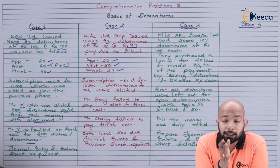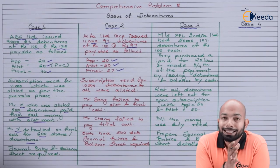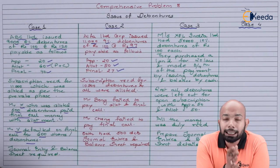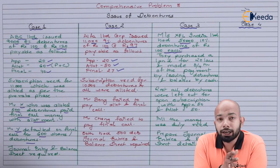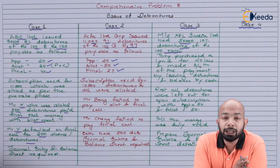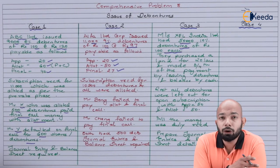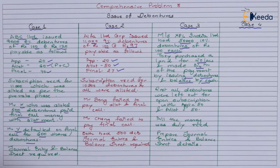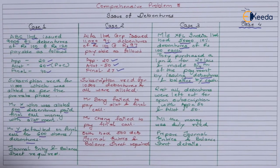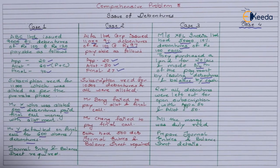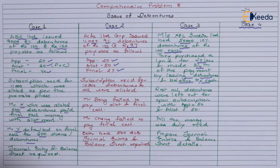Case 3 refers to XFL India Limited, which has 50,000 debentures of Rs.100 each. They purchased land worth Rs.20,00,000 and made three-fourths of the payment by issuing debentures while the balance was paid in cash. After issuing three-fourths of debentures, the remaining balance was kept open for subscriptions. The total Rs.100 was divided into two sections only — application and allotment. All debentures were duly subscribed and all money was duly received. We have to prepare the journal entries and balance sheet.